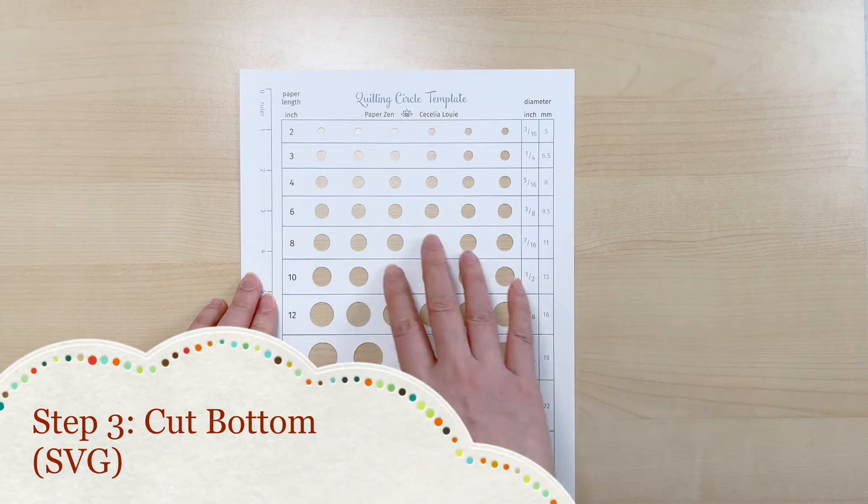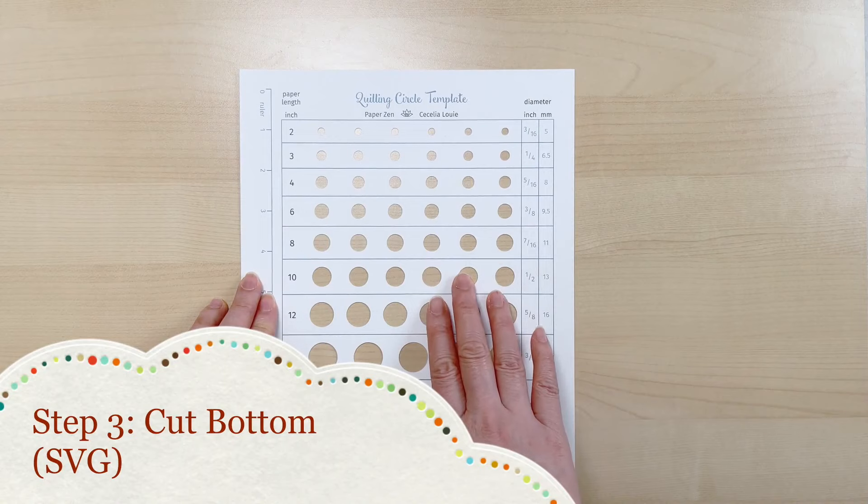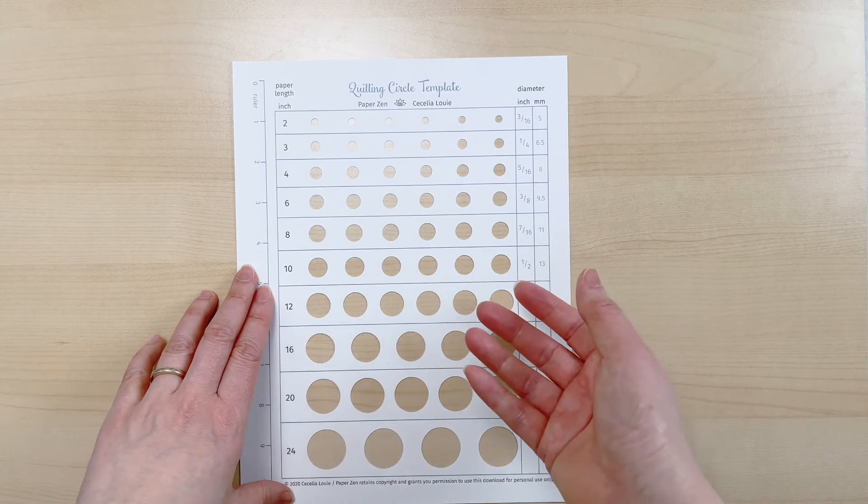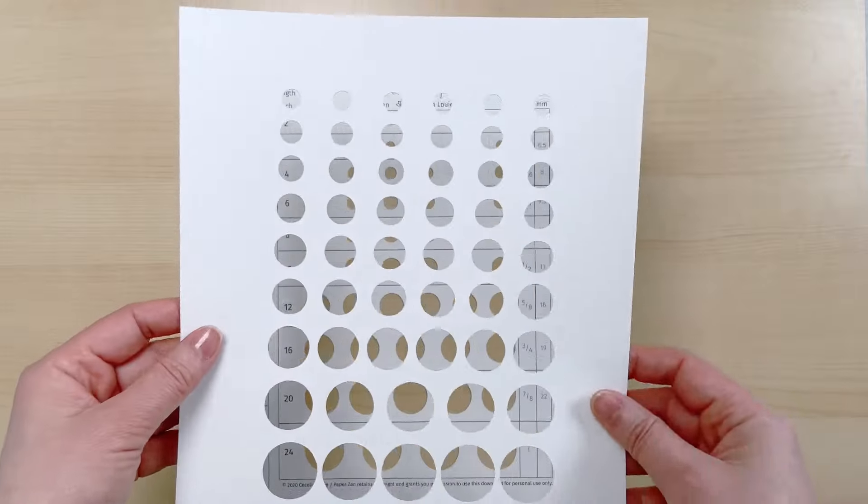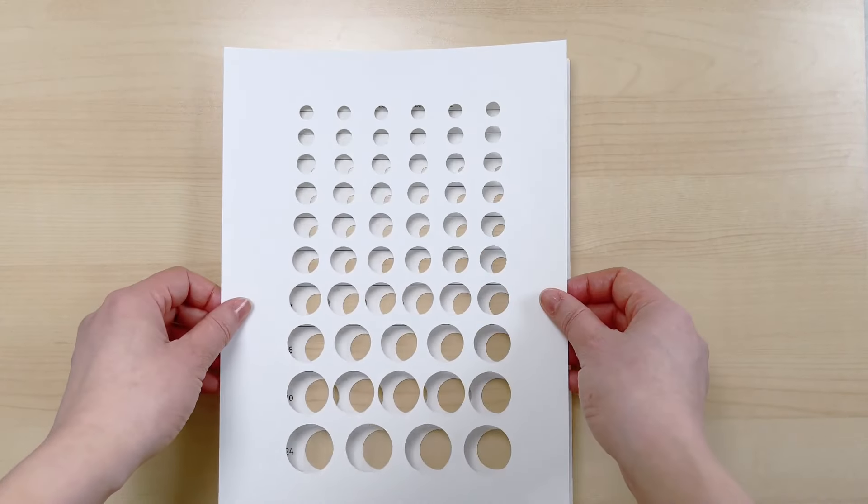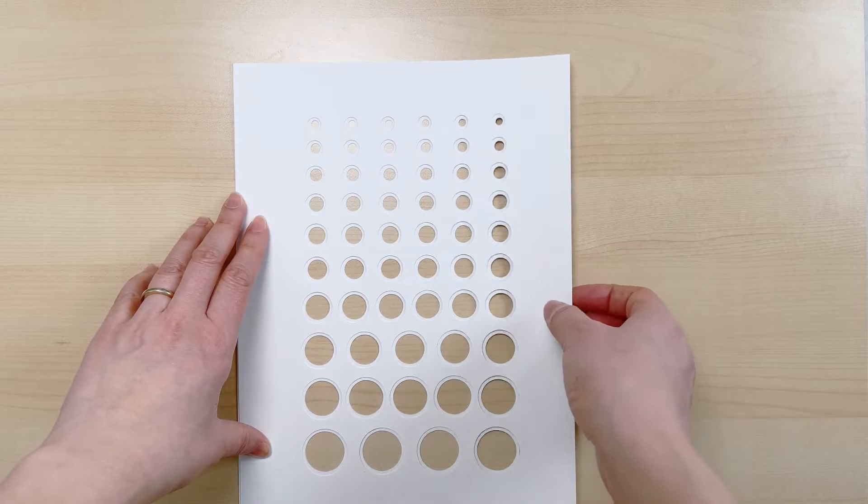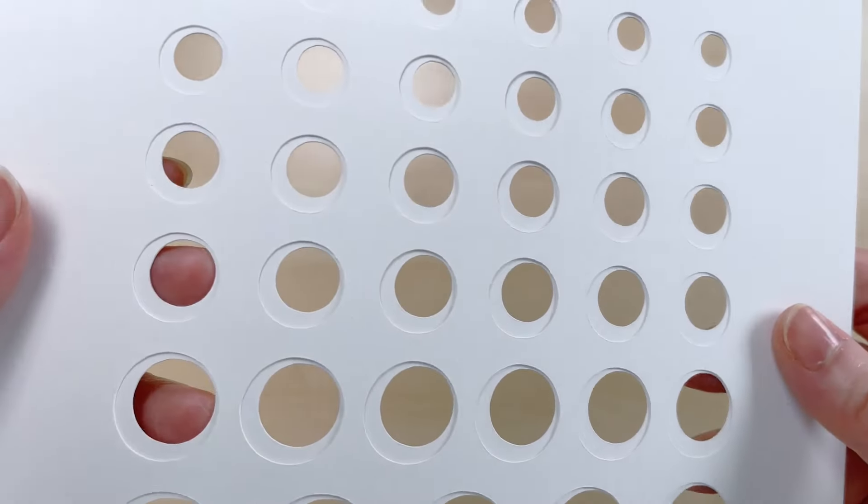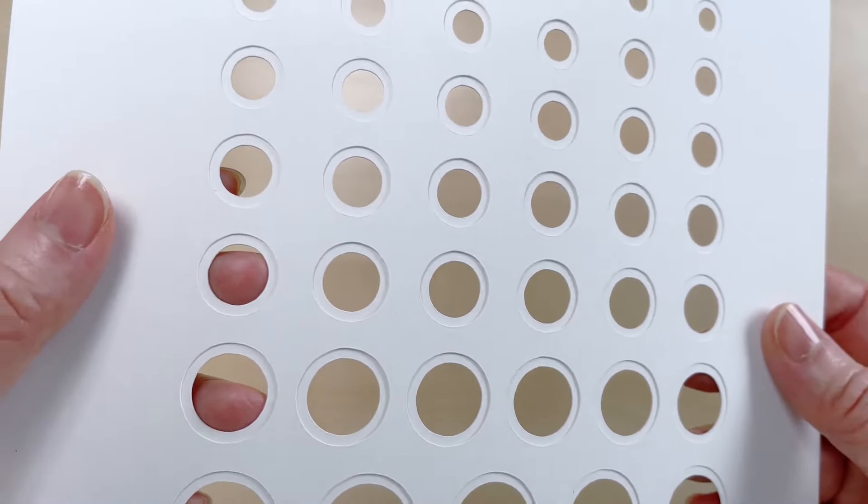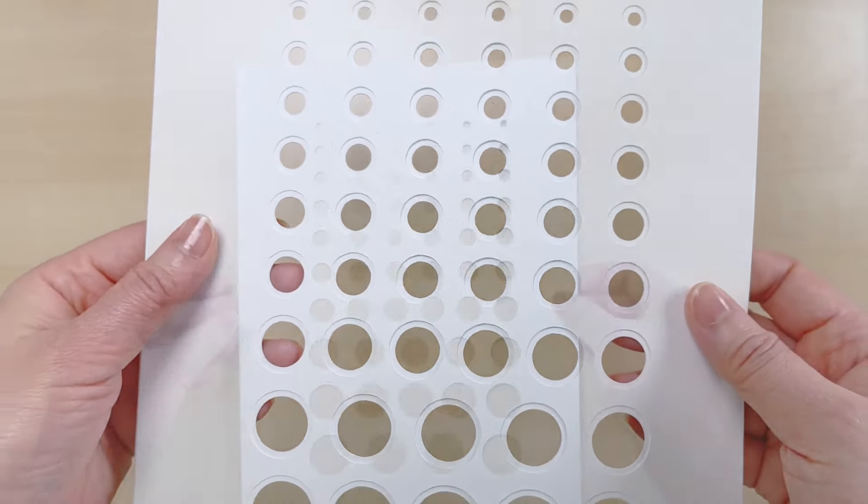Now that I've cut my circles out of my top layer I'm going to import the last file and cut that out of just regular cardstock. And after I've cut that out I'll lay it on top of my first layer and you can see that the circles are larger than the first layer. And if yours looks like this then you've done it right.